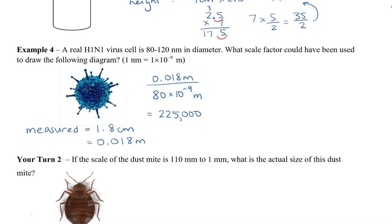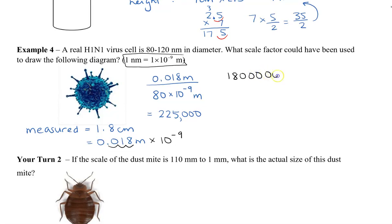Here's another way to find the scale factor using nanometers instead of meters. The measured virus of 1.8 centimeters equals 0.018 meters. Converting to nanometers by dividing by 10 to the negative 9 — that is, moving the decimal 9 places — gives us 18,000 nanometers. Dividing 18,000 nanometers by the real-life object size of 80 nanometers, we again get 225,000 as our scale factor.